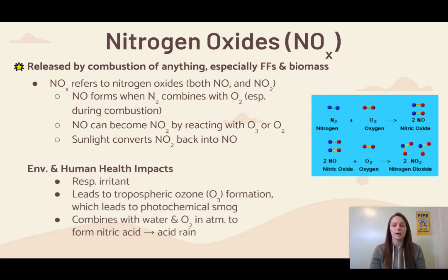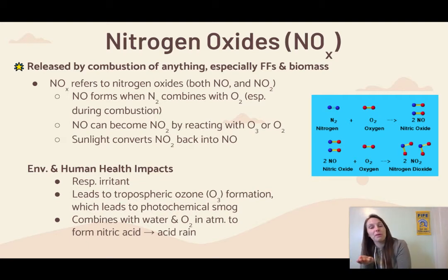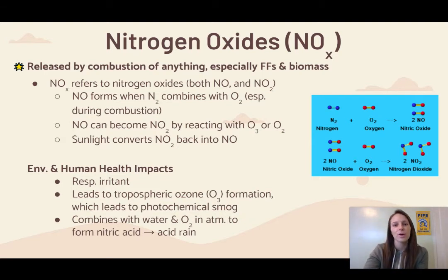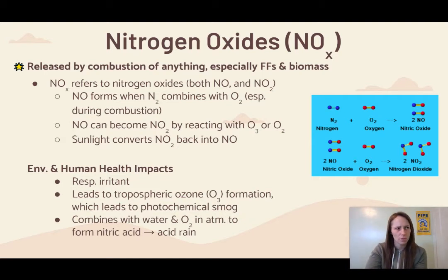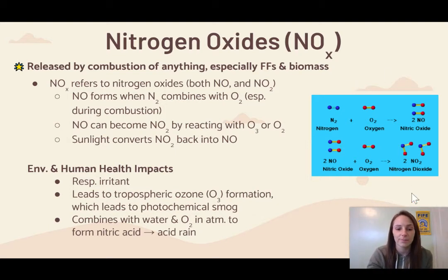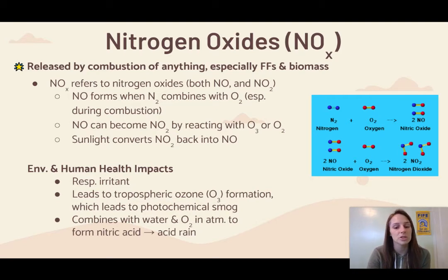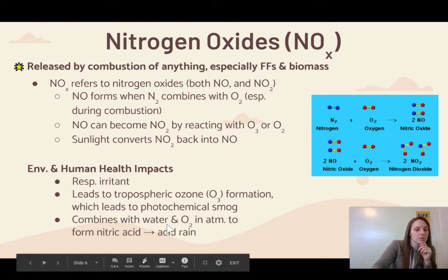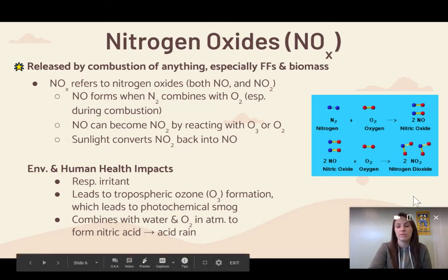For the environmental and human health impacts of NOx, you might notice that respiratory irritation is a very common one. If you're ever asked for a human health impact from air pollution and you aren't sure, a solid guess would be respiratory irritant, because basically all of them are. NOx also leads to tropospheric ozone formation, which leads to photochemical smog. And it can combine with water and oxygen to form nitric acid, which also leads to acid rain — similar to how sulfur dioxide interacts with water and oxygen to make sulfuric acid.